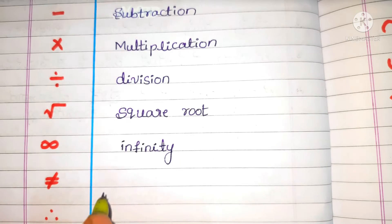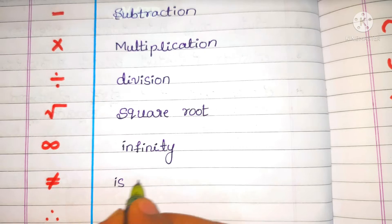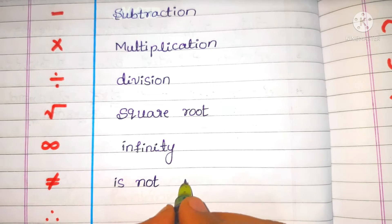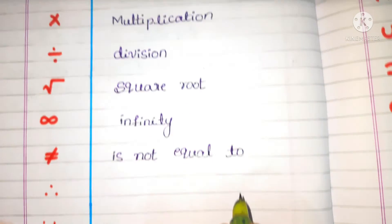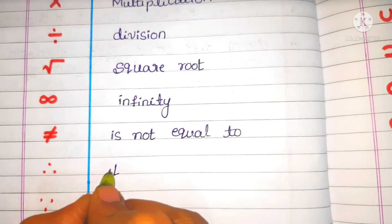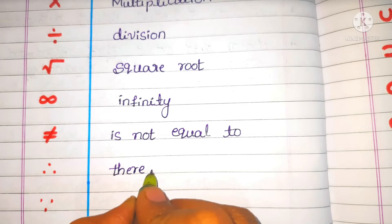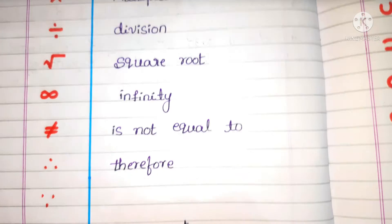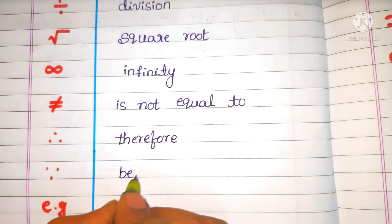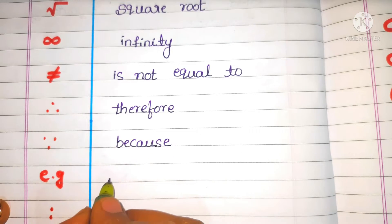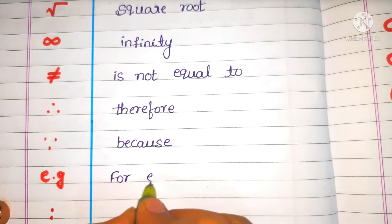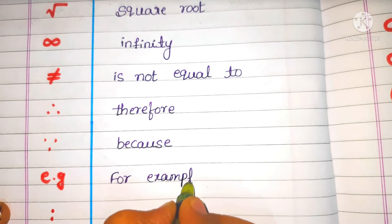Next one: Infinity. Next: Is not equal to. Next: Therefore. Next one: Because.